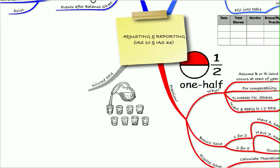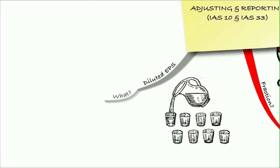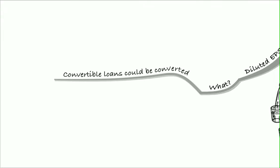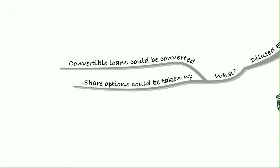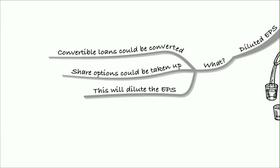The last thing we looked at in this was our diluted earnings per share. Remember, this is where our convertible loans could be converted into shares. Share options could be taken up. That will dilute the earnings per share. That will make it less because there's more shares.